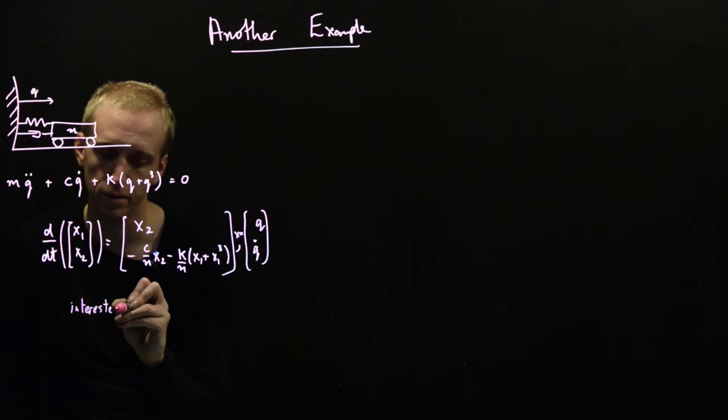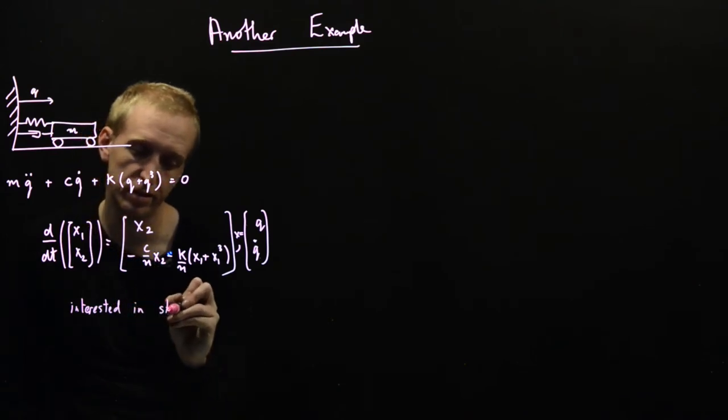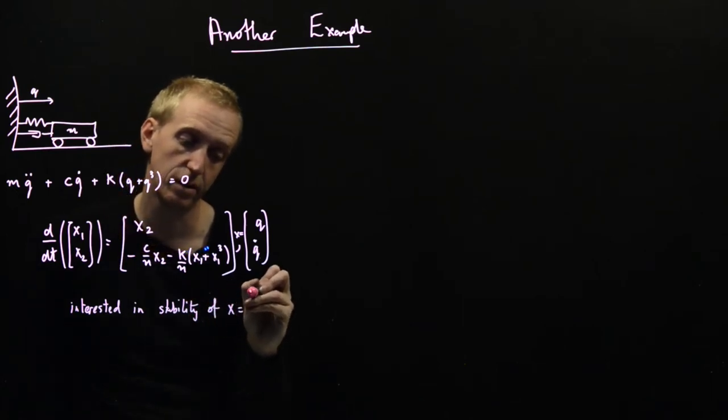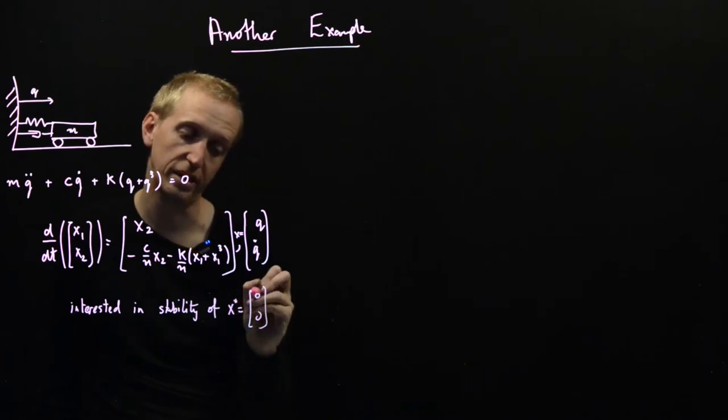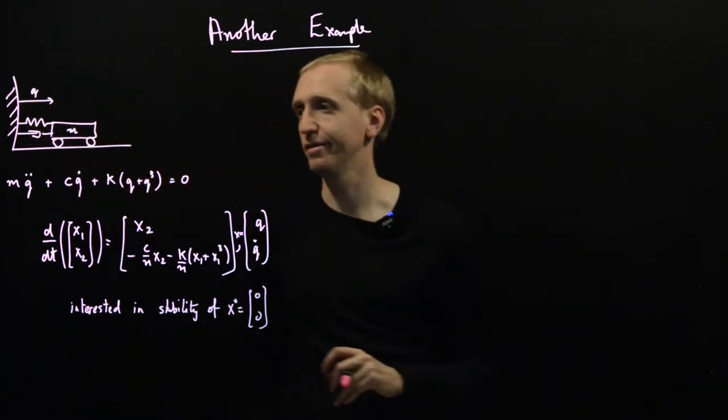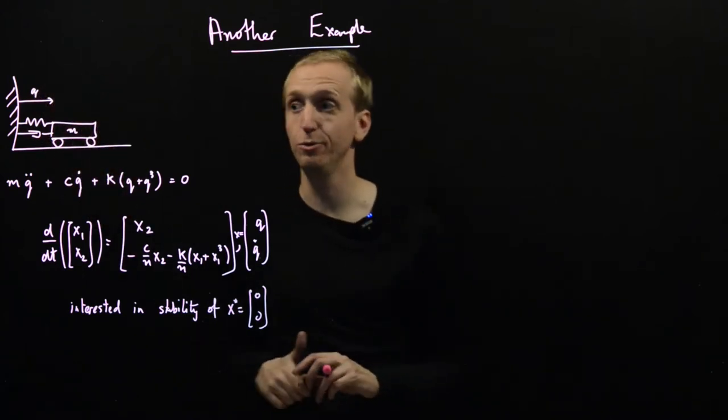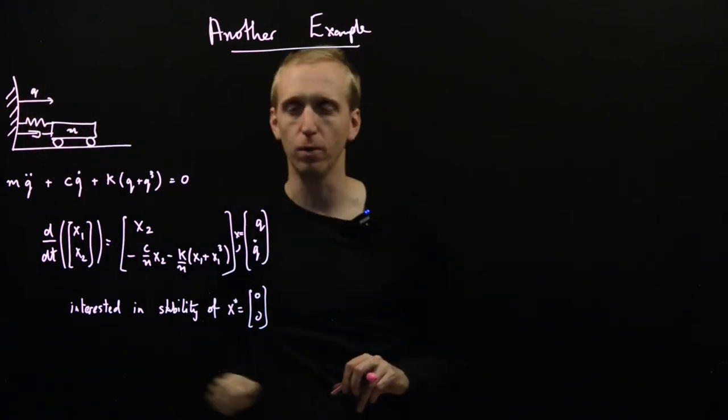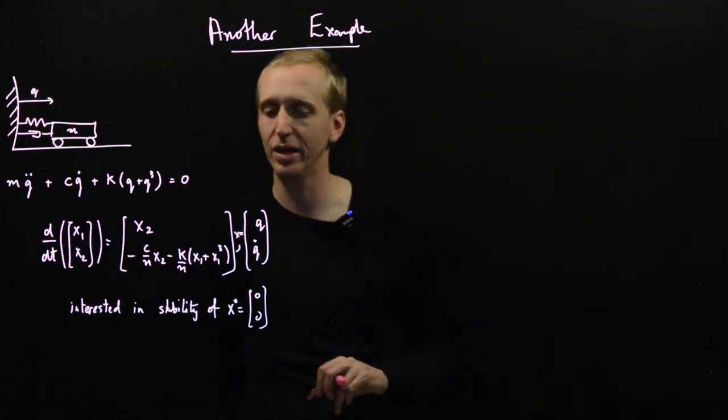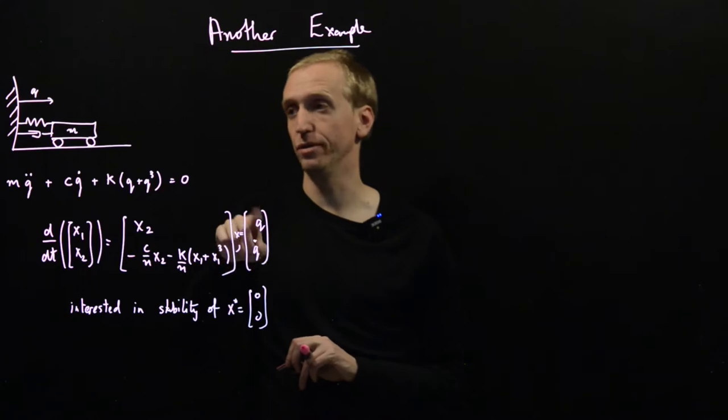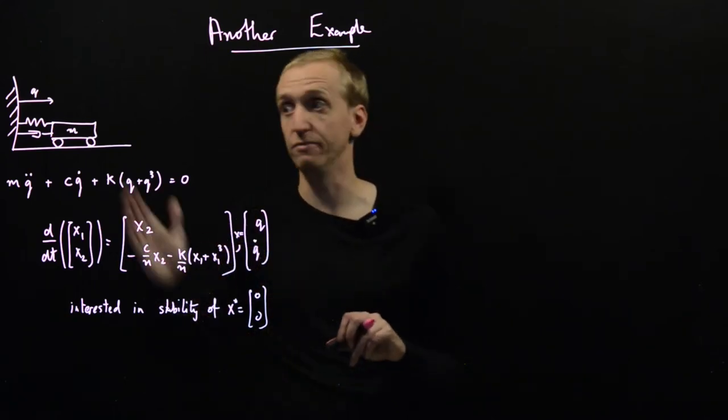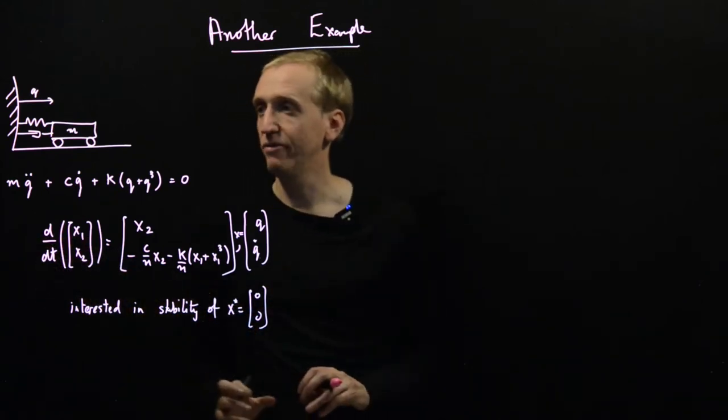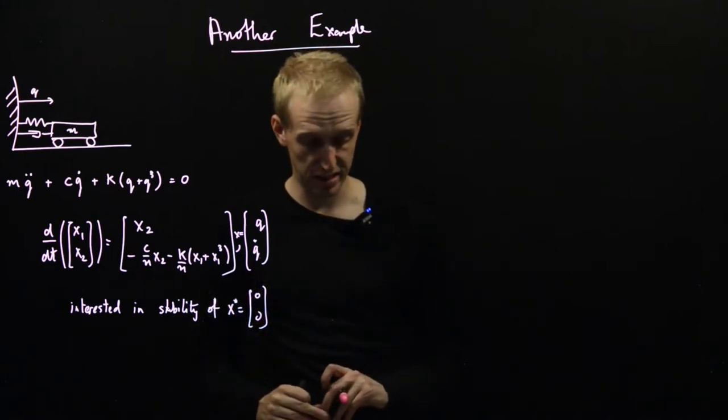So we're interested in stability of the equilibrium point x star equal to zero zero, and it's best not to think about precisely what that would mean in terms of this picture too carefully. This is sort of saying if the length q is zero so that the truck would be pushed right up against the wall, in which case this wouldn't be a very good model because there's a wall in the way. But we can maybe imagine that everything's already been pushed into our relative coordinates relative to some point further away from the wall. But here we have our problem. We would like to prove stability of this equilibrium point.